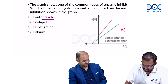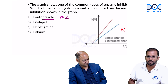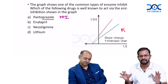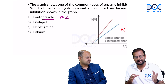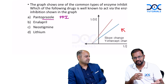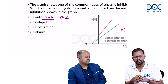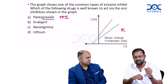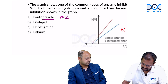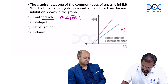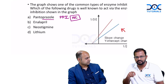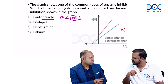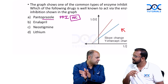Pantoprazole — everyone knows prazole drugs belong to proton pump inhibitors (PPIs). These drugs are used for gastric ulcer and are the current drug of choice for peptic ulcer disease. Other prazoles include omeprazole, lansoprazole, rabeprazole, and esomeprazole. All these prazoles inhibit the proton pump in a non-competitive manner. They are also sometimes called suicide inhibitors, though the irreversible mechanism is a slightly different classification from simple non-competitive inhibition.